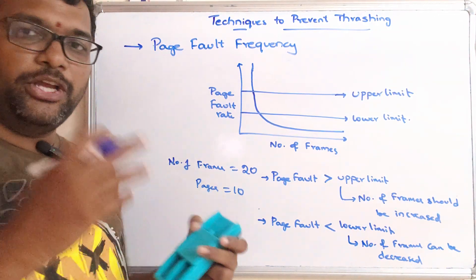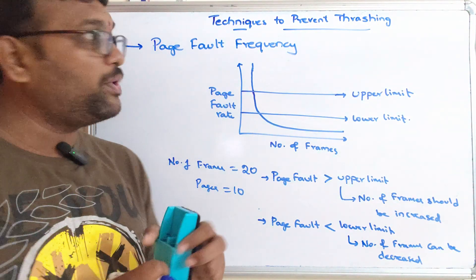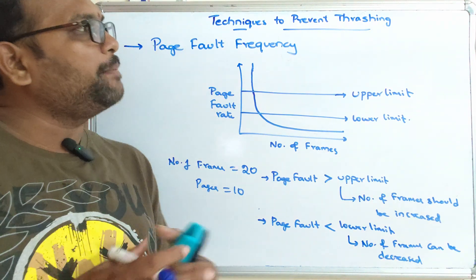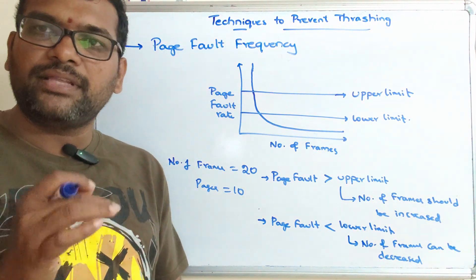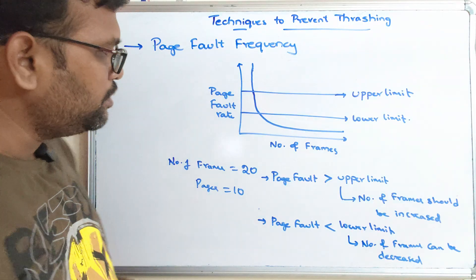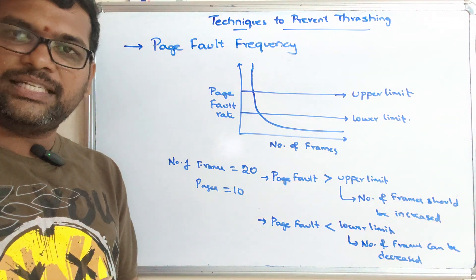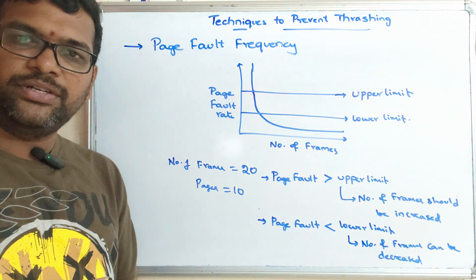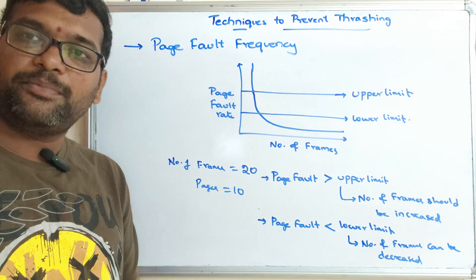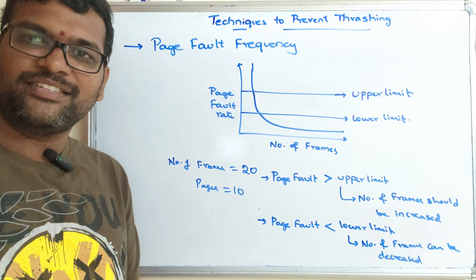By using these two techniques — the Working Set Model and Page Fault Frequency — we can prevent thrashing. Hope you understood. If you enjoyed the session, please like, share with your friends, and don't forget to subscribe to our channel. Thanks for watching!